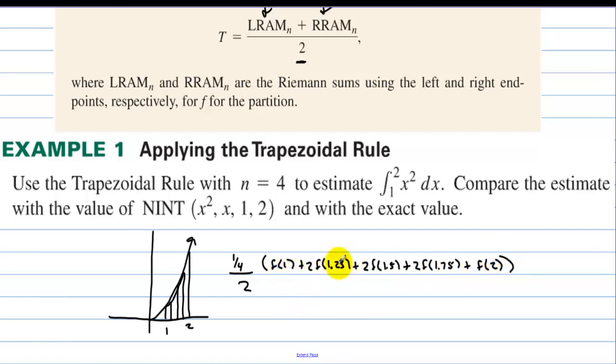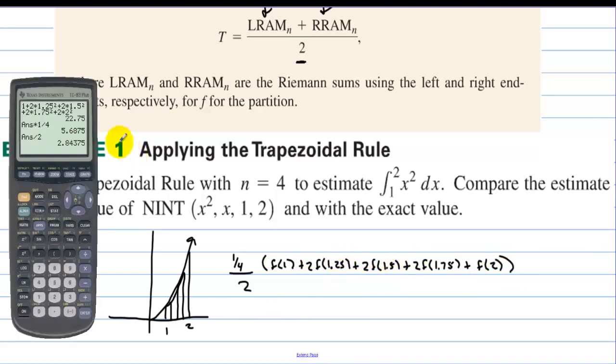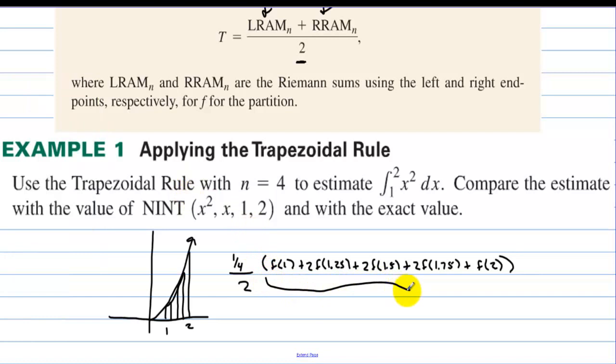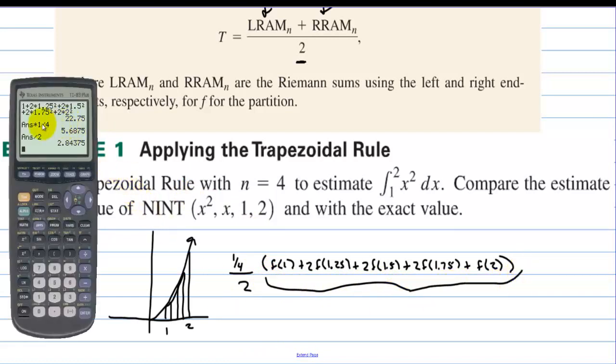And I'm going to use the calculator to find all these values. I've entered the values into the calculator. We get 22.75 just for this part right here. And then I've multiplied that by 1 fourth. That's h. And then over 2. Divide by 2 and we get 2.844.